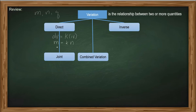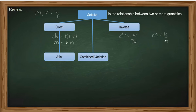Or as we decrease N, M also decreases. Now, how about inverse variation? We have DV equal to K over IV, or M is equal to K over N, which is read as M varies inversely as N. This means that as we increase the independent variable, the dependent variable decreases.